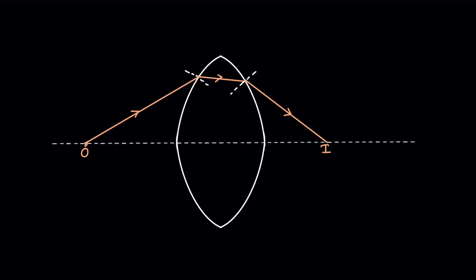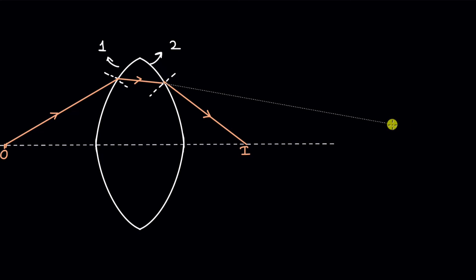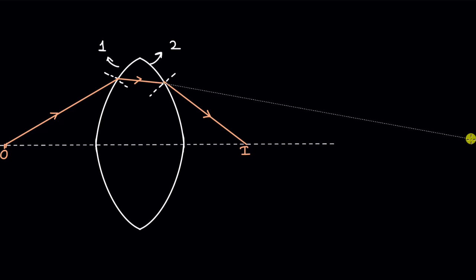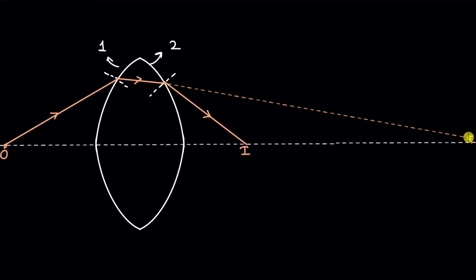We see that there are two interfaces — the first and the second. If the second interface wasn't there, the light ray would have continued in a straight line and an image would have formed at a different point further along. There are many rays going like this; a ray from the bottom also gets refracted and forms a real image, and without the second refracting surface these rays would have converged at that earlier point.